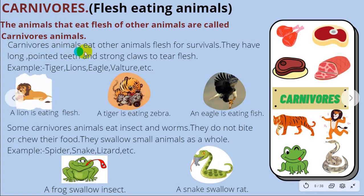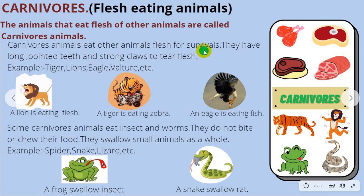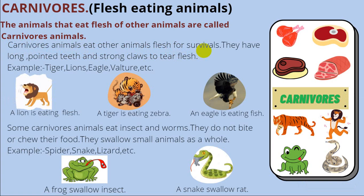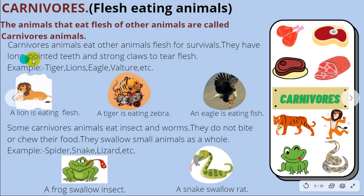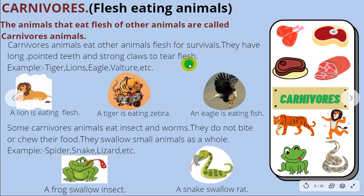Carnivorous animals eat other animals' flesh for survival. They have long, pointed teeth and strong claws to tear flesh.